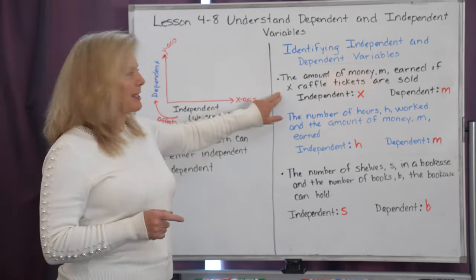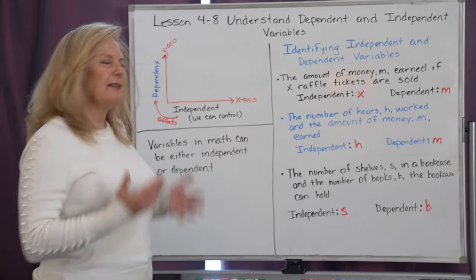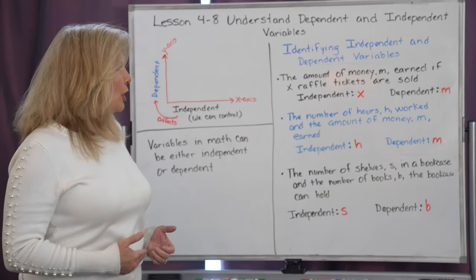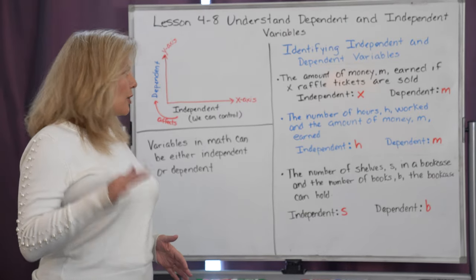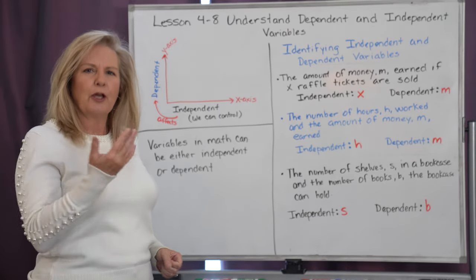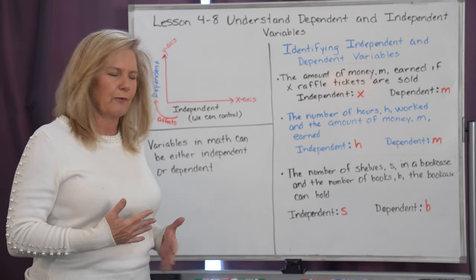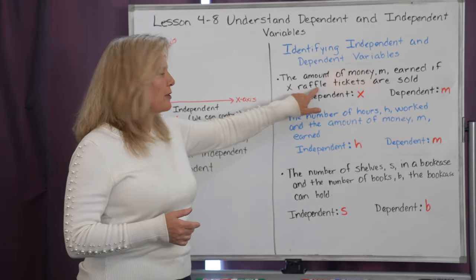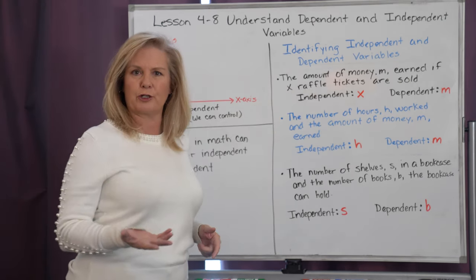Let's take a look at this problem: The amount of money, called m, earned if x raffle tickets are sold. I want you to think, what do we have more control over? Do we have more control over the raffle tickets or do we have more control over the money?